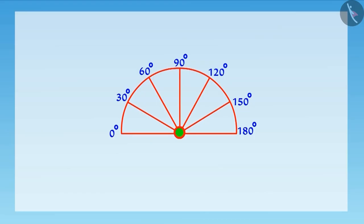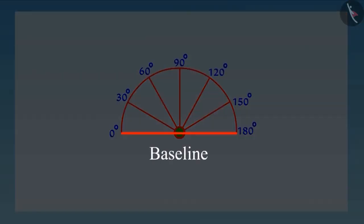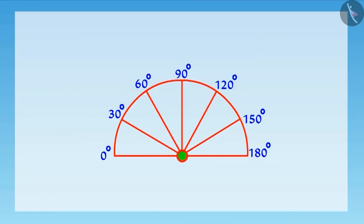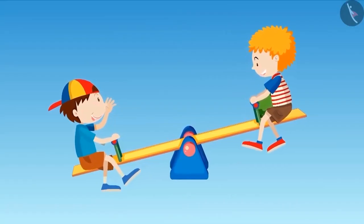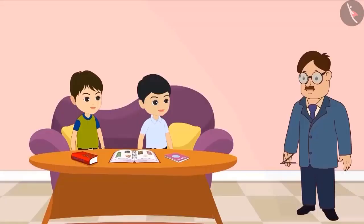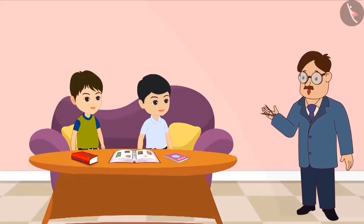And remember, one line of angle must be placed along the baseline of the protractor. Now, this second line of the angle tells us the correct measurement of the angle. Oh, wow, uncle! Can I now make an accurate measurement of the angle of the seesaw with the help of this protractor? Yes, sure, Bholu!